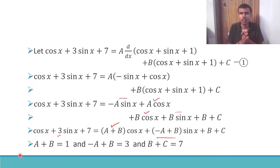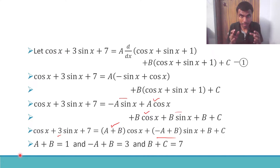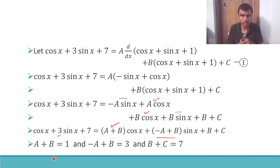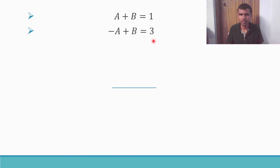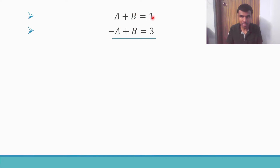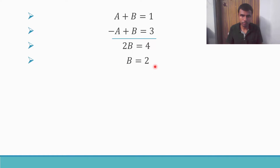Now we got our equations. If you see these two equations — a + b = 1 and minus a + b = 3 — if I add these two equations, I can eliminate a and get b. So: minus a + a cancel, b + b is 2b, and 1 + 3 is 4. So 2b = 4, therefore b = 2.